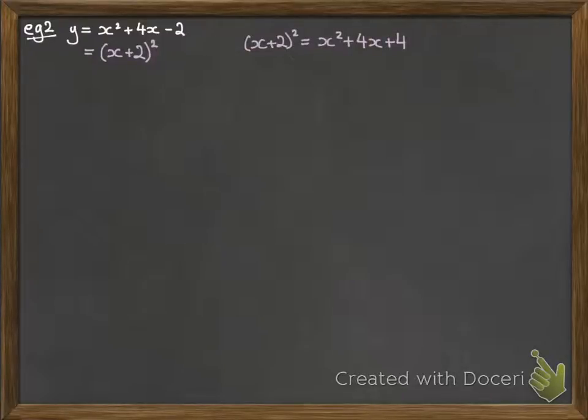Now that gives us the x² and the 4x but we've got the end parts different. So we have a +4 and we really want it to be a -2. So we take off that 4 and put the -2 back in, and then we simplify down what that would be.